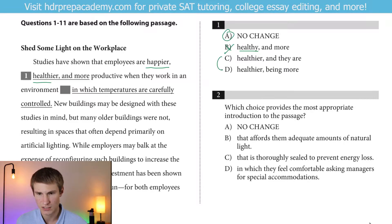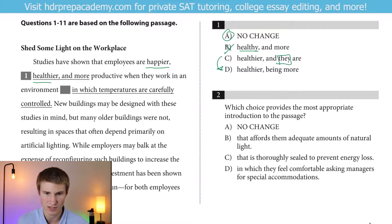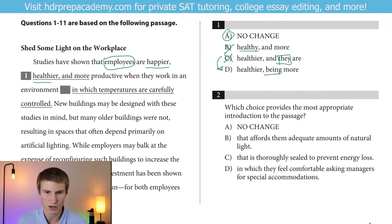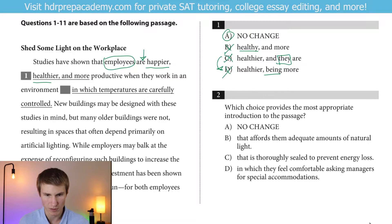Looking at C and D, I'll explain why those are wrong as well. We don't need to repeat 'they' — we already said 'employees' right here. And then saying 'being,' we already said that they are. So you don't have to say 'being' there. Moving on.